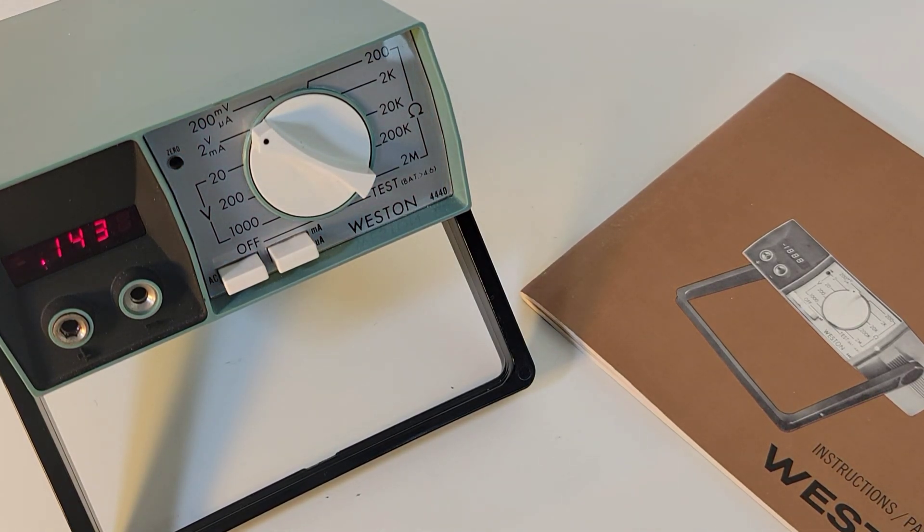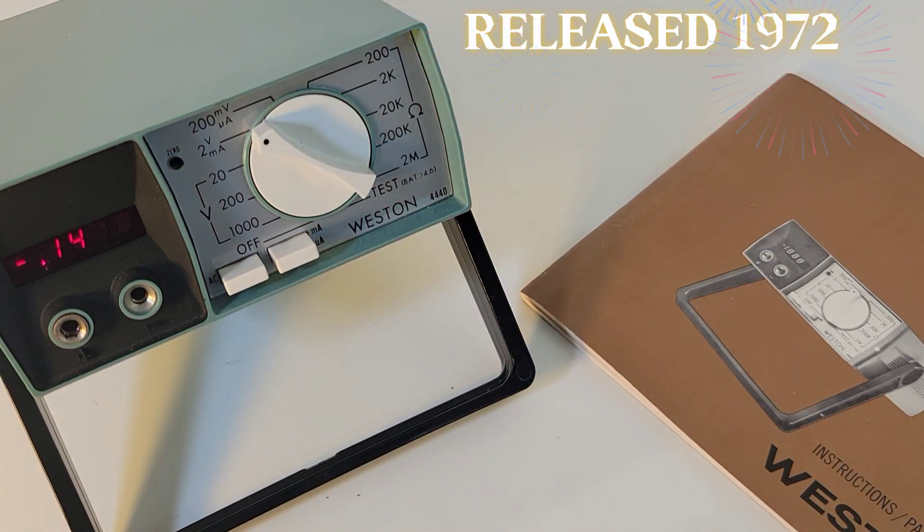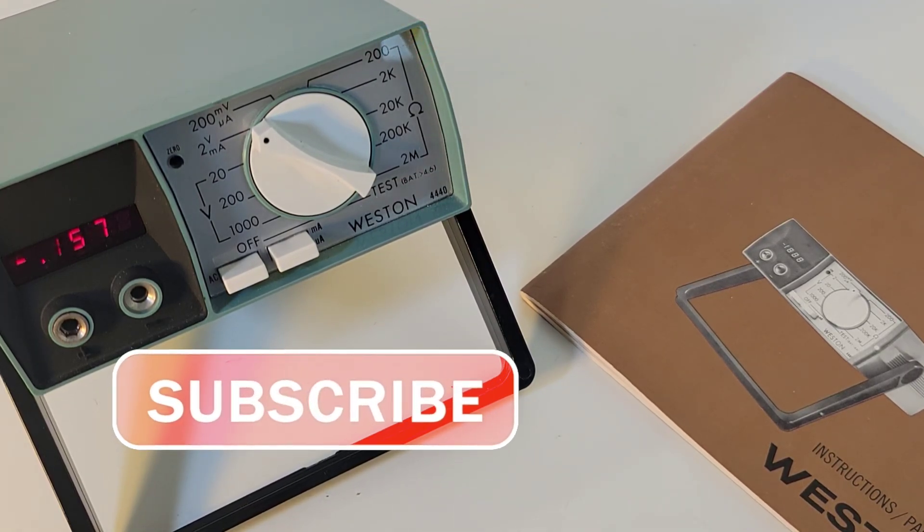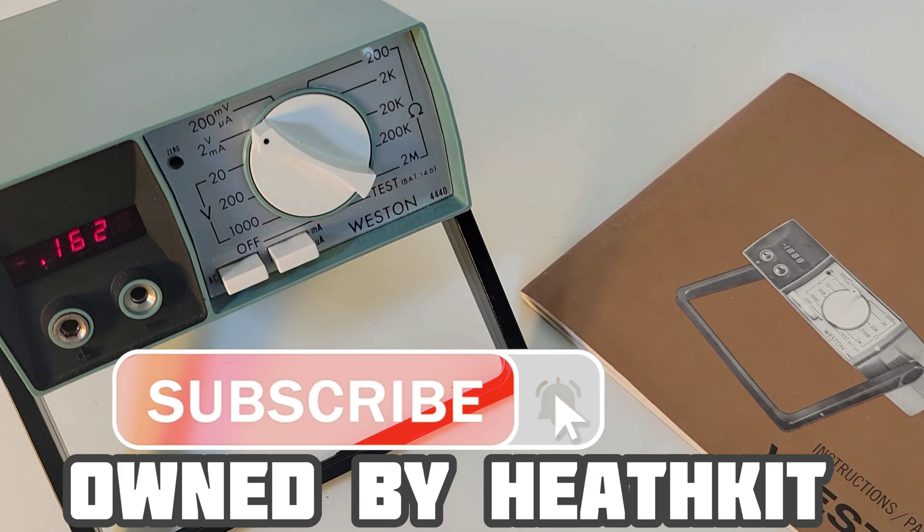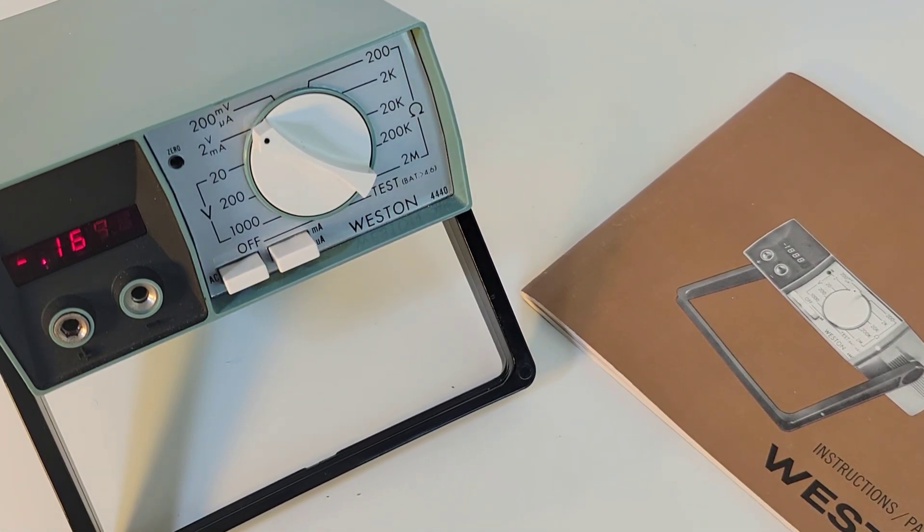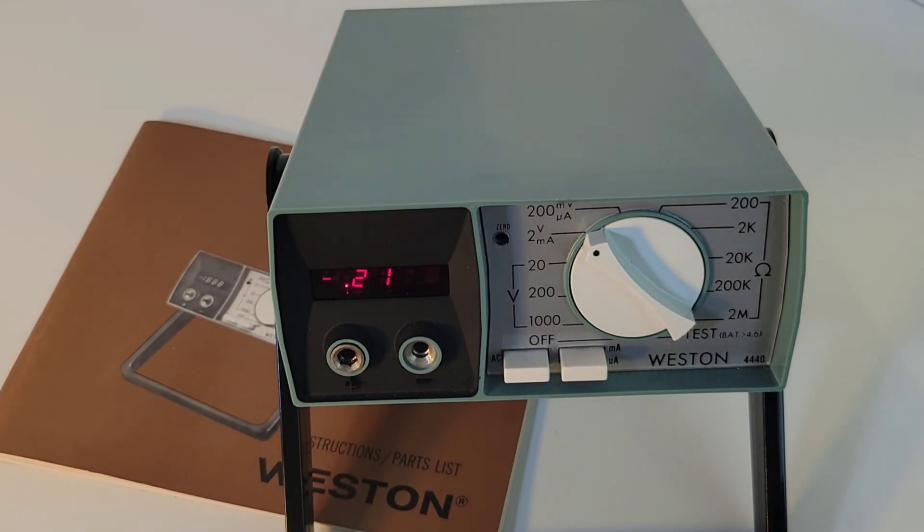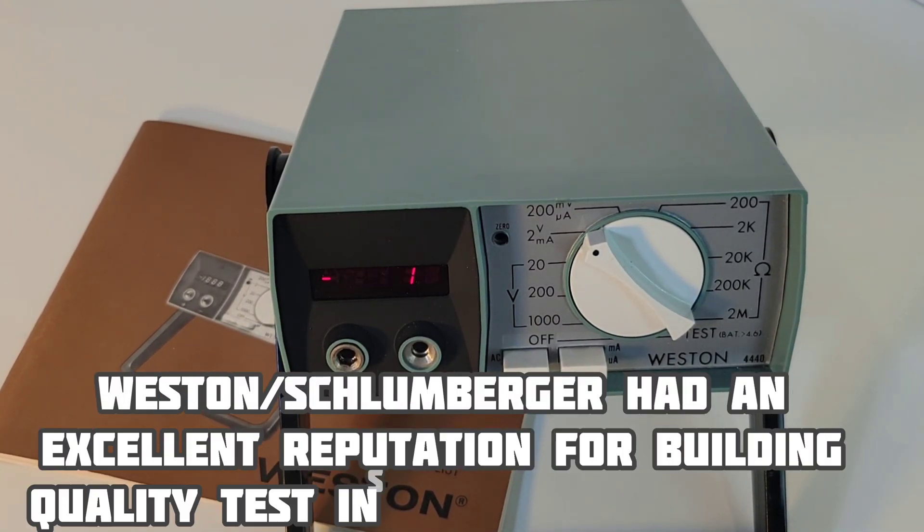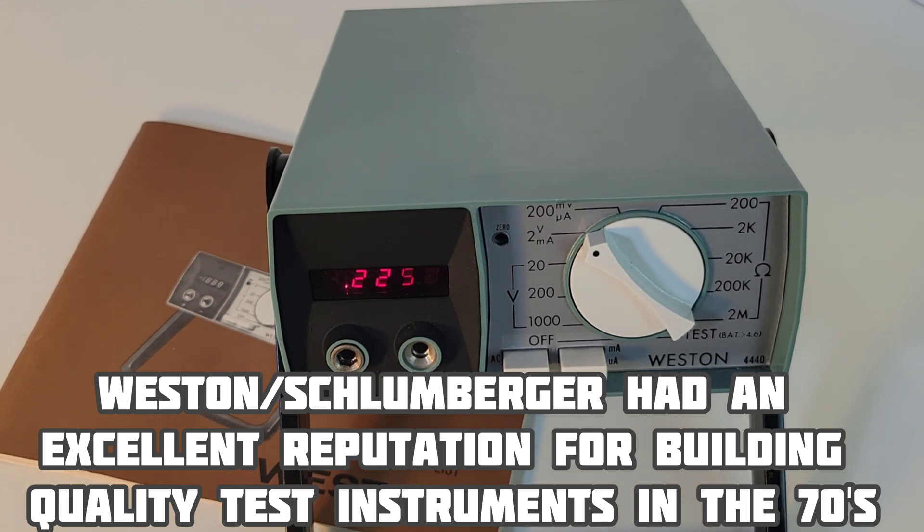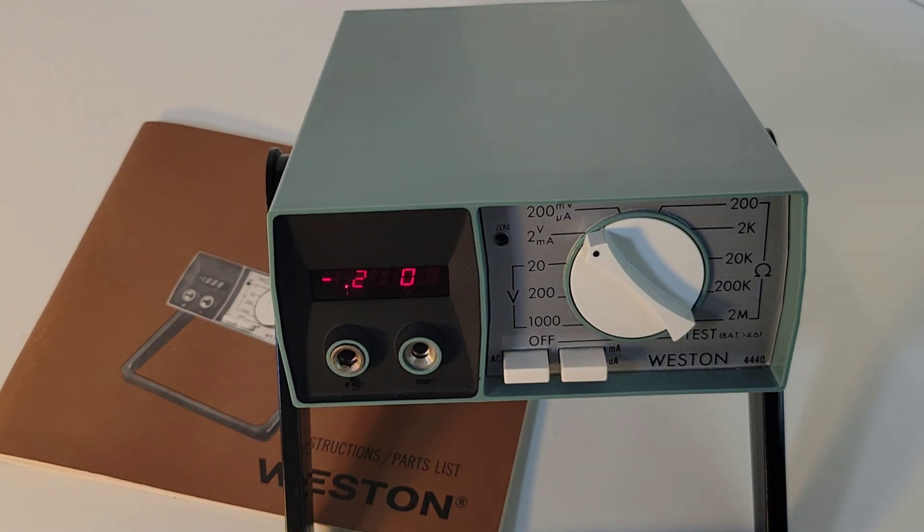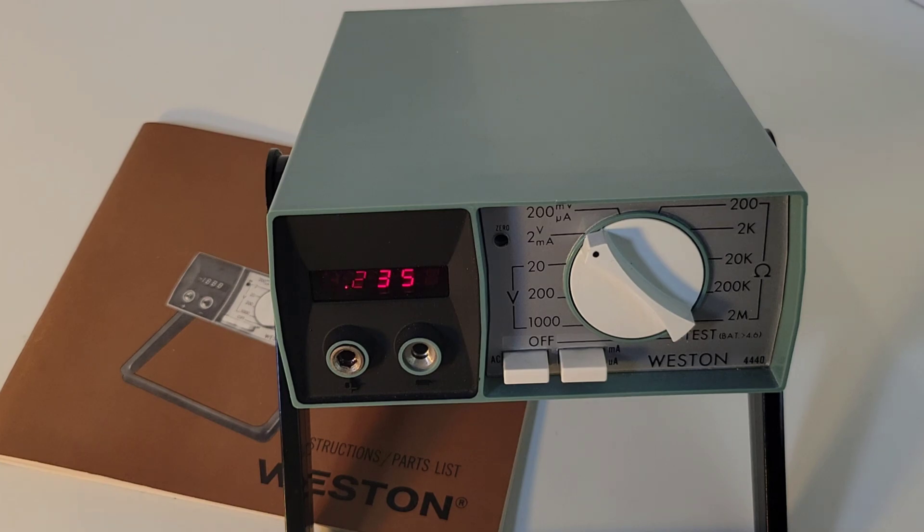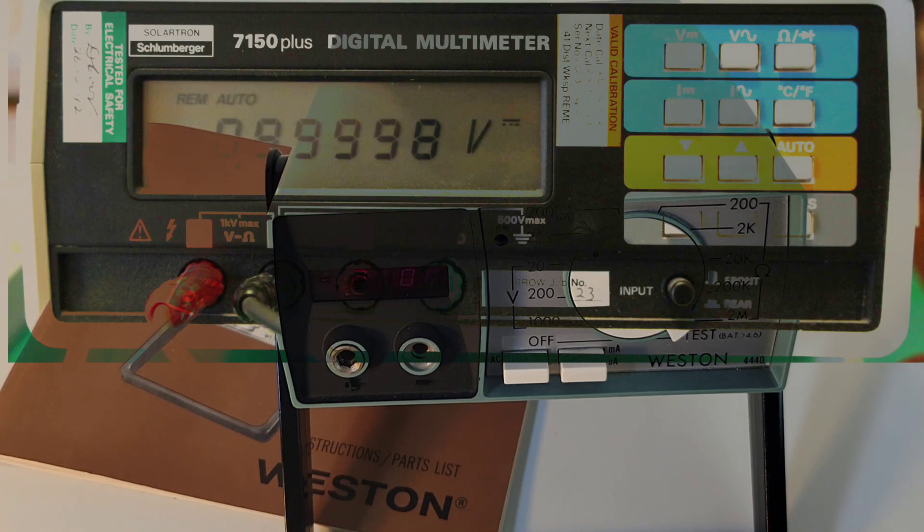They were made by, get this, Schlumberger, who actually owned Heathkit. Politics even in the world of multimeters. But Weston meters were marketed to industry folks, professional gear. And Schlumberger also made Solartron digital meters, which are considered among some of the best lab meters ever made.